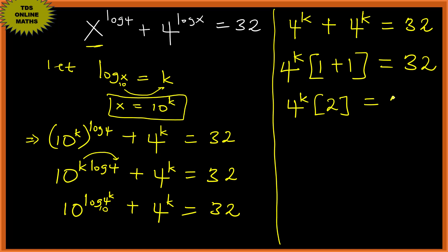So let's simplify by dividing by 2. We have 4 to the power k equals 16. Let's solve this exponential equation. 4 to the power 2 is 16, therefore k is 2.